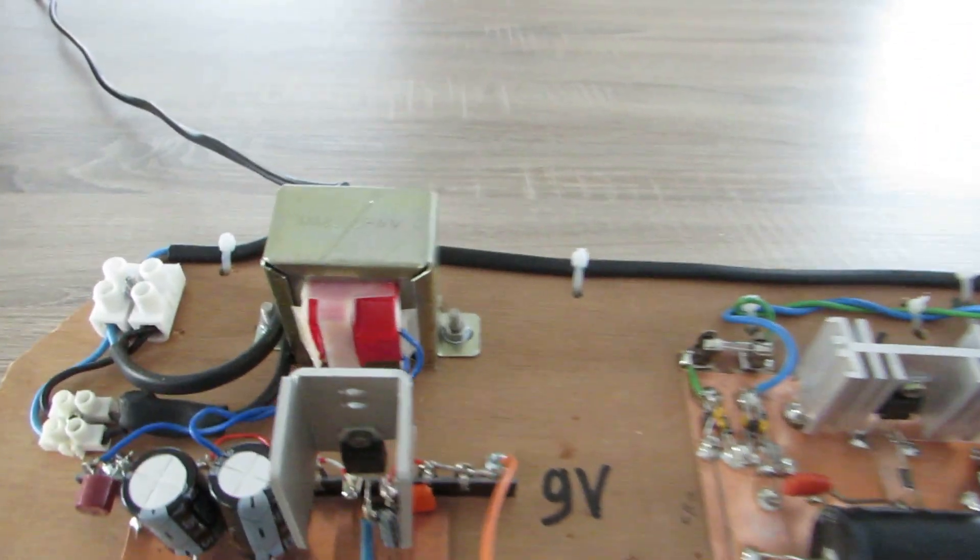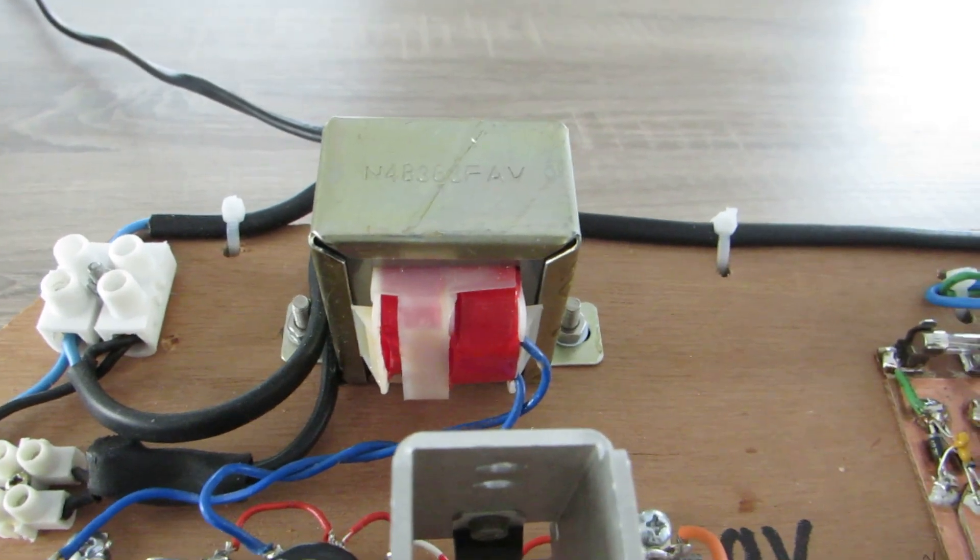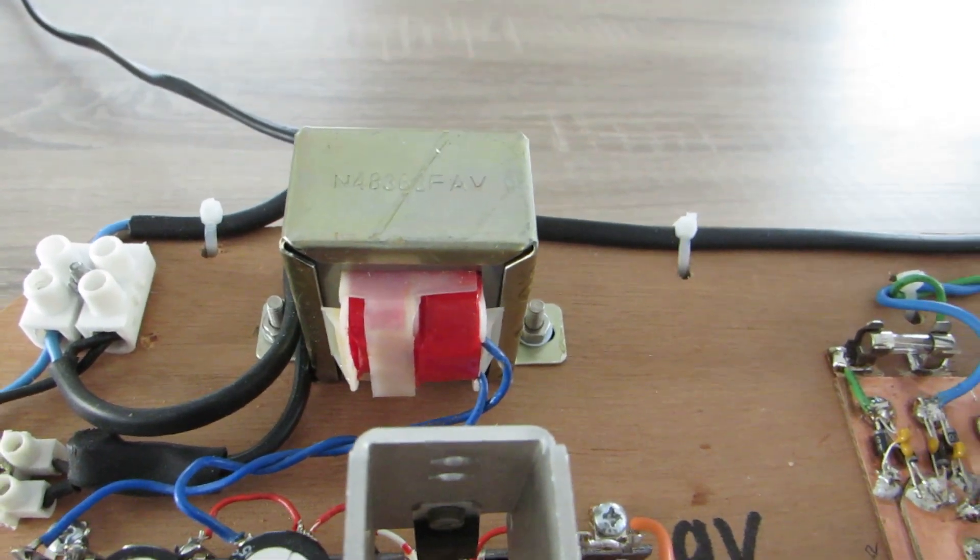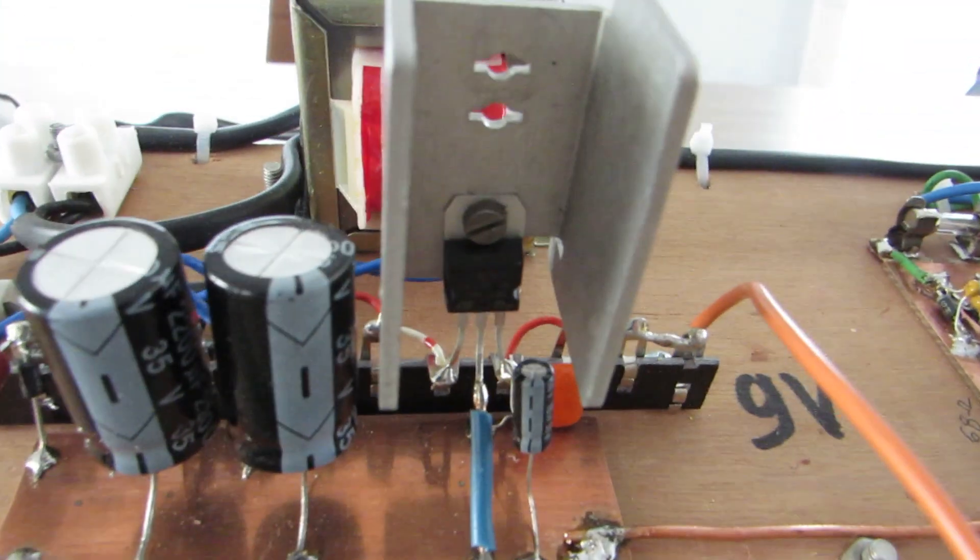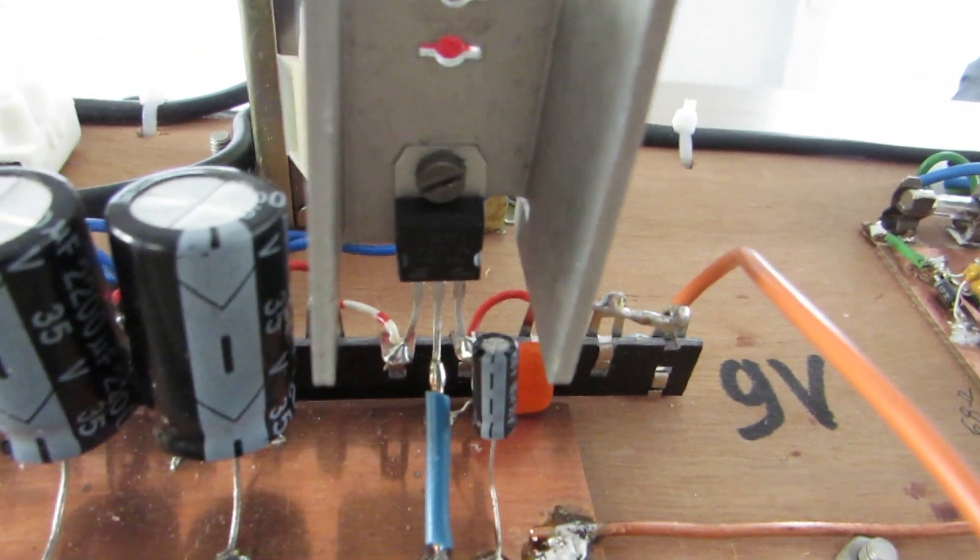The first transformer gives out 12V AC to get 9V DC with the voltage regulator, the 7809.